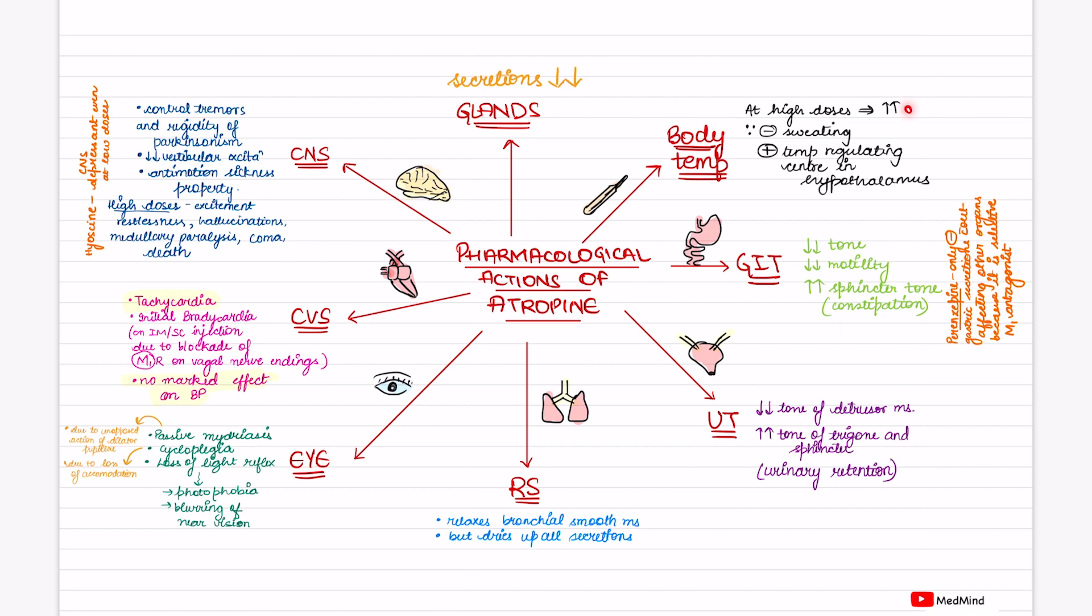Body temperature: at high doses it increases body temperature. At the same time, it causes sweating to be inhibited and affects the temperature regulating center in hypothalamus. In the glands, it will reduce secretions.